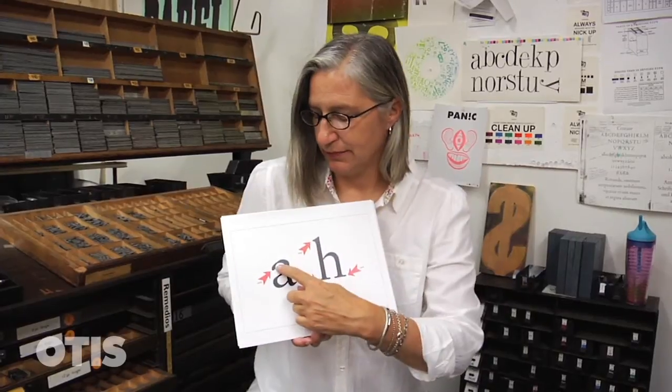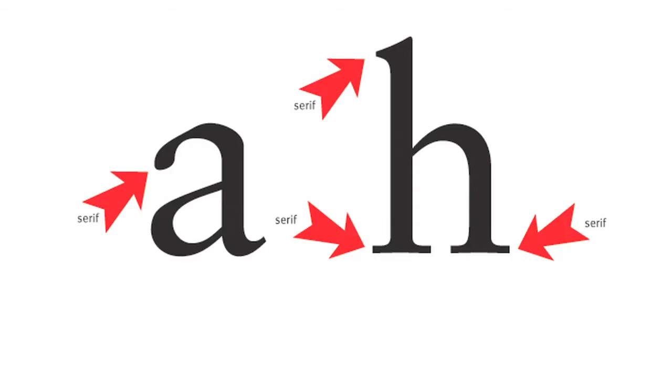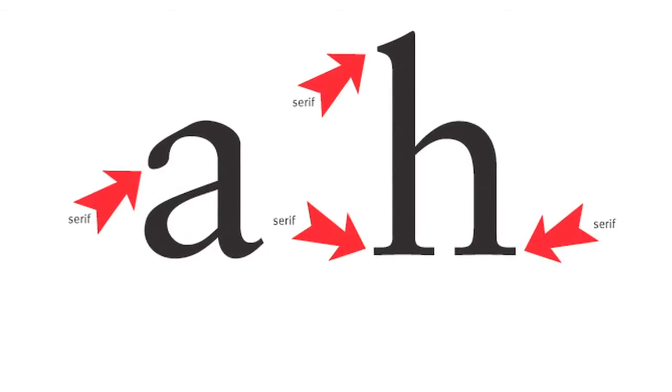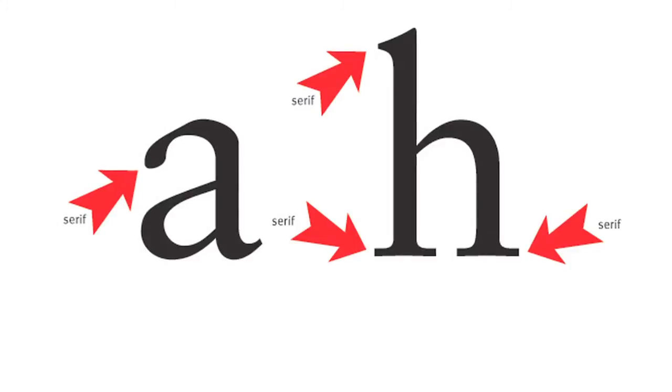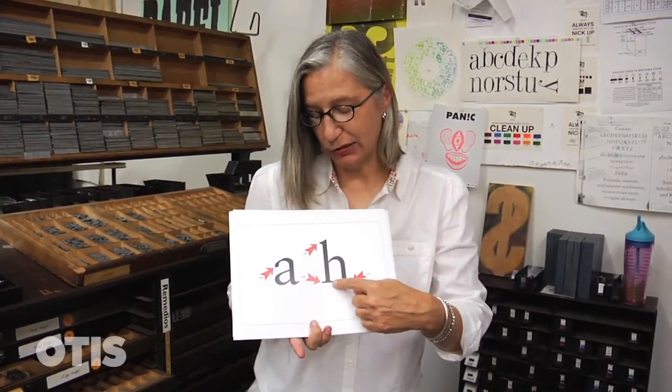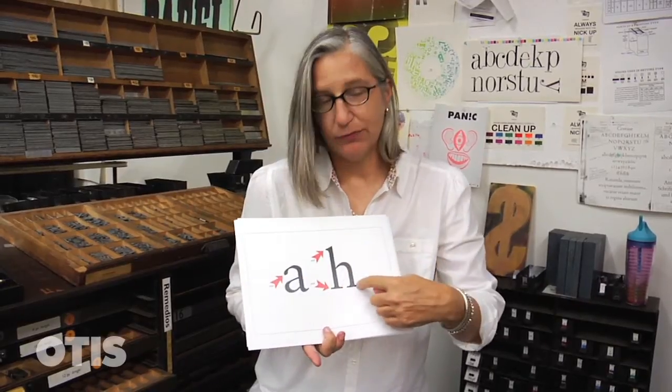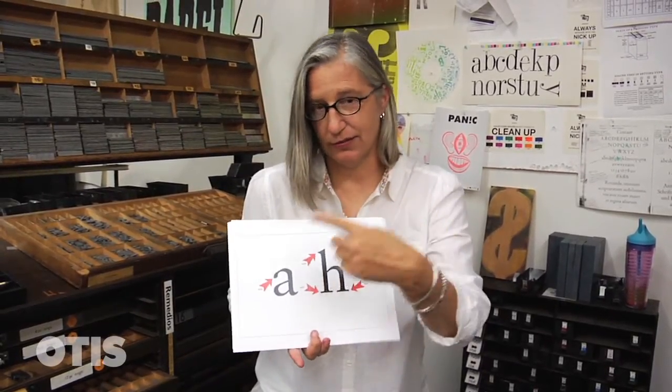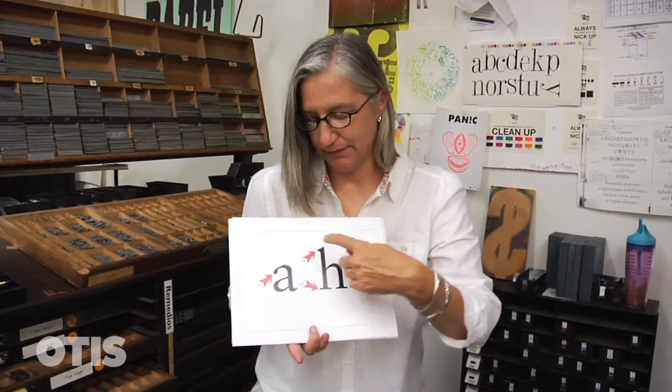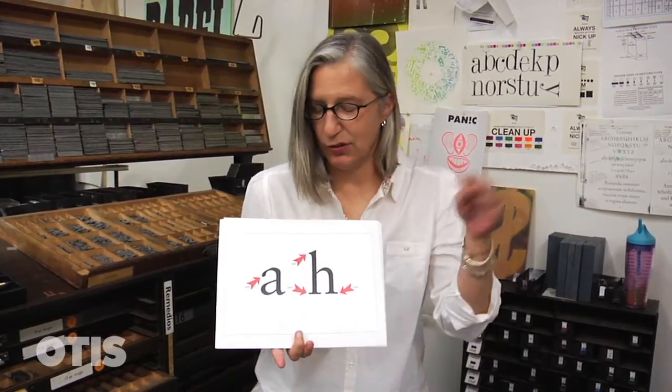Serifs. There are different kinds of typefaces — there are typefaces that have serifs. Serifs are little extensions that come off of bigger strokes. Sometimes they're round, sometimes they're pointy, sometimes they look like feet, but those are all serifs. Typefaces that don't have serifs are called sans serif. Sans in French is 'without,' so without serifs. We've got serifs in the world and we've got sans serifs.